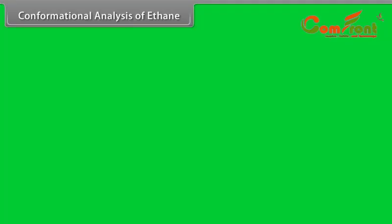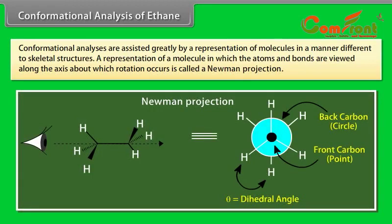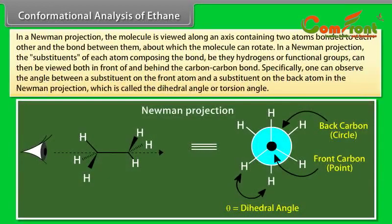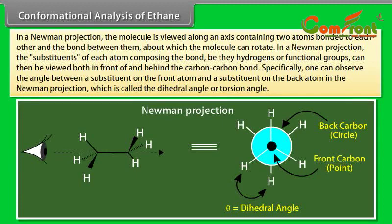Conformational analysis of ethane: A representation of a molecule in which the atoms and bonds are viewed along the axis about which rotation occurs is called a Newman projection. In a Newman projection, the molecule is viewed along an axis containing two atoms bonded to each other, and the bond between them about which the molecule can rotate. The substituents of each atom — be they hydrogen or functional groups — can be viewed both in front of and behind the carbon-carbon bond. One can observe the angle between a substituent on the front atom and a substituent on the back atom, which is called the dihedral angle or torsion angle.